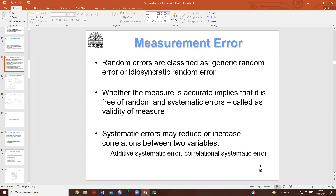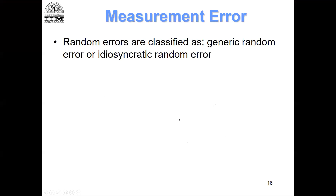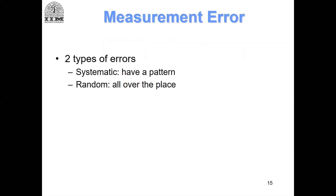We have discussed so far measurement error and ideas about measurement error. Let me give you a little more insight into what measurement errors are and what kind of measurement errors exist. There are two kinds of measurement errors: one is called random measurement error and the other is called systematic measurement error. The idea of these two measurement errors is very simple.